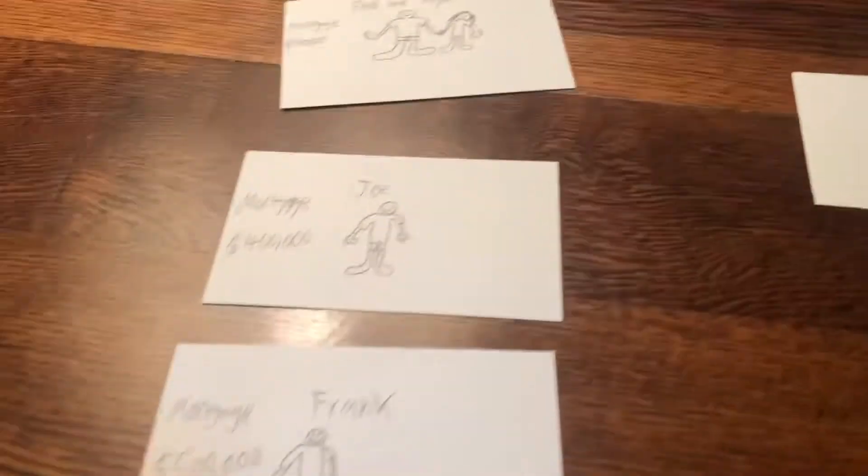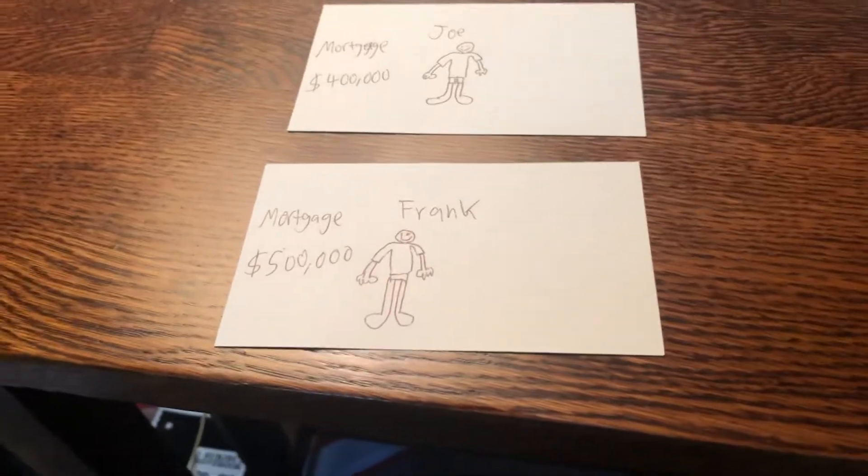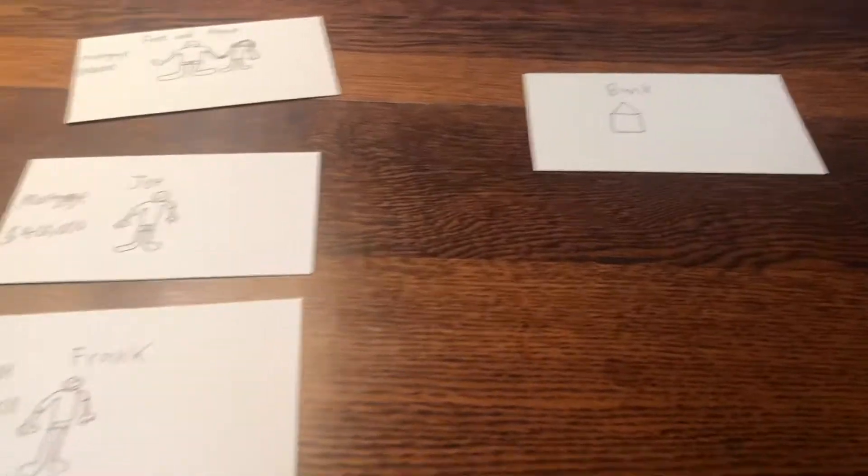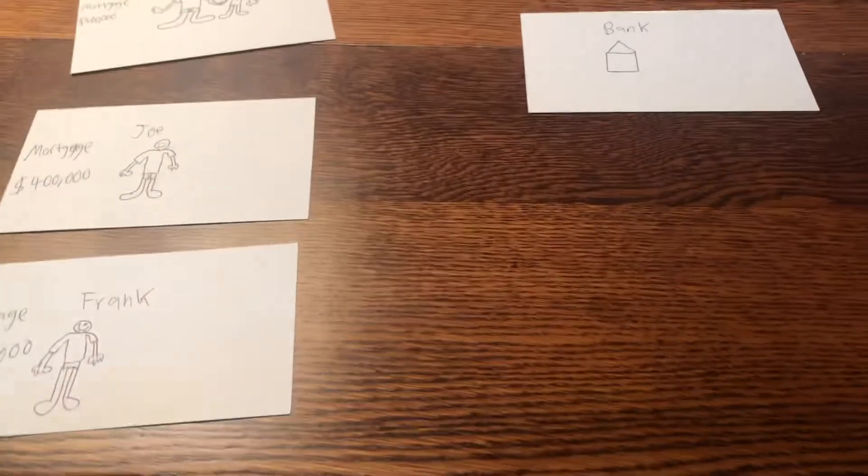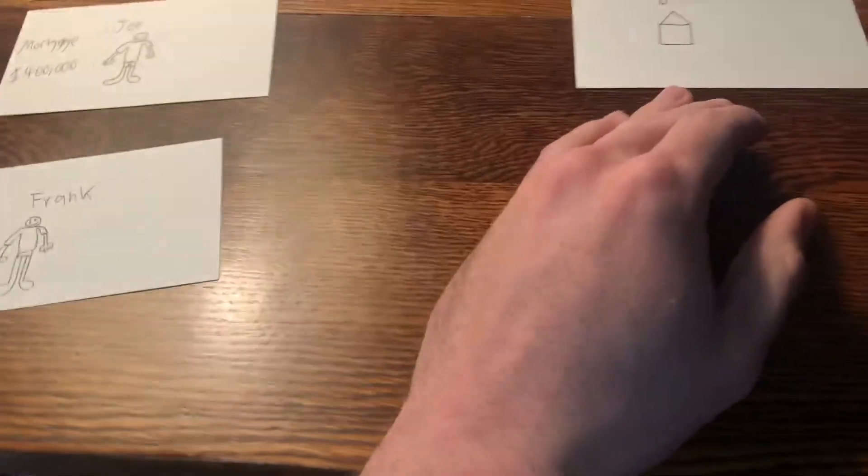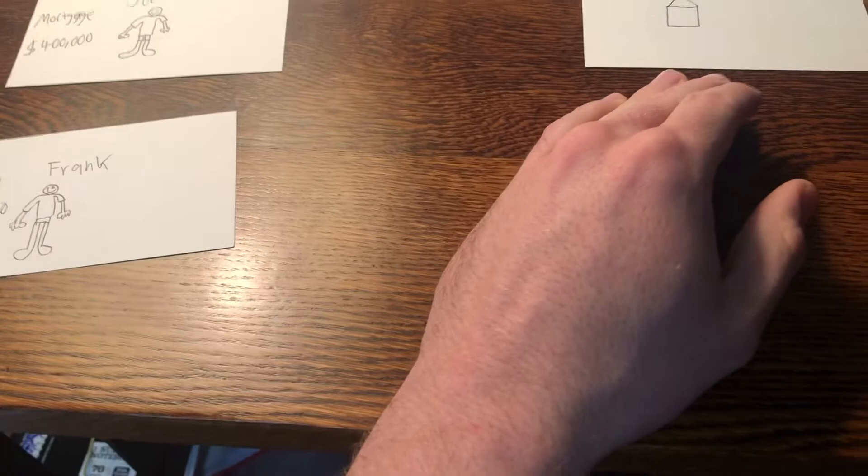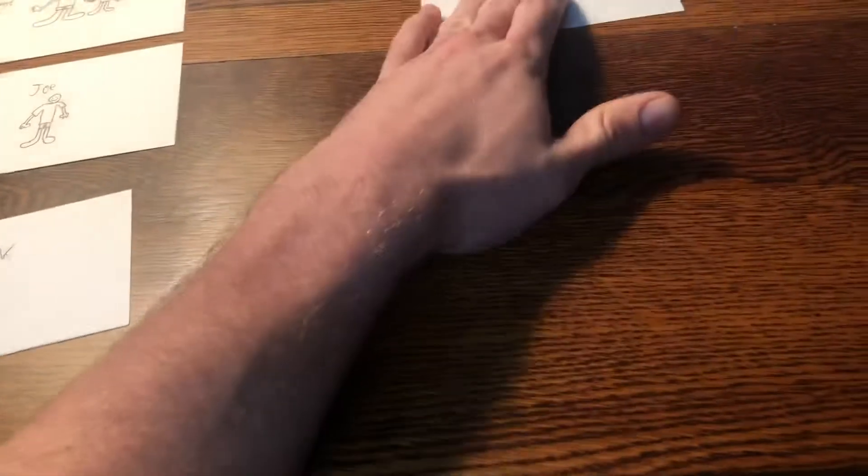Then comes along Frank. Frank wants a mortgage for $500,000. Good credit. Bank sees him and says hey, more money, let's go for it. Now all of these individuals are paying monthly payments to the bank, and the bank wants to make some money off of this, so they want to sell these mortgages to investors.